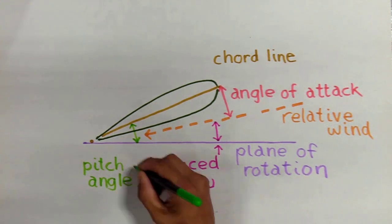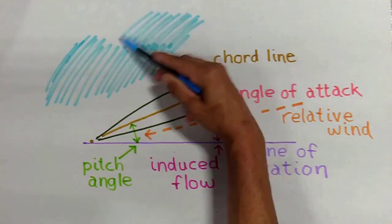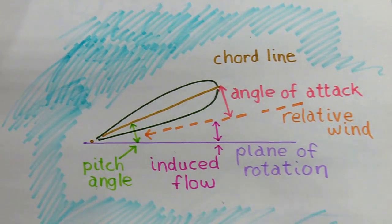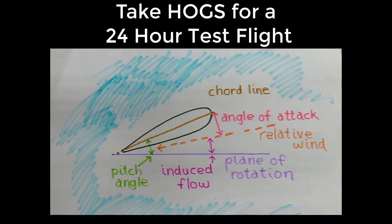Now your overall angle from your chord line to your plane of rotation - this is a mechanical angle, it's not an aerodynamic angle - this is your pitch angle, and that is just simply how much pitch you have compared to the plane of rotation.